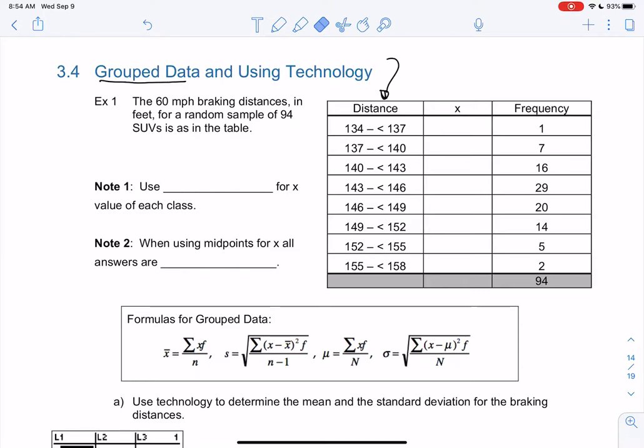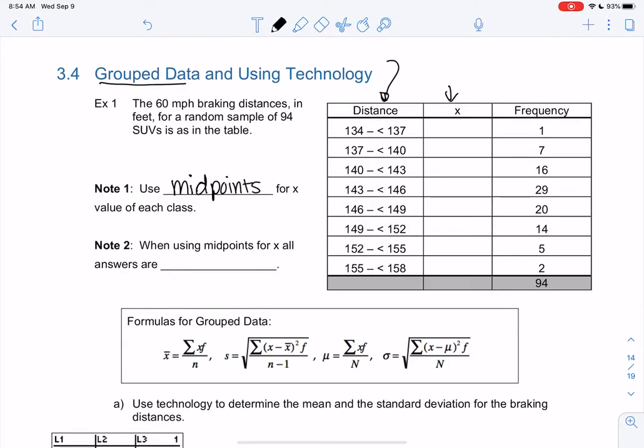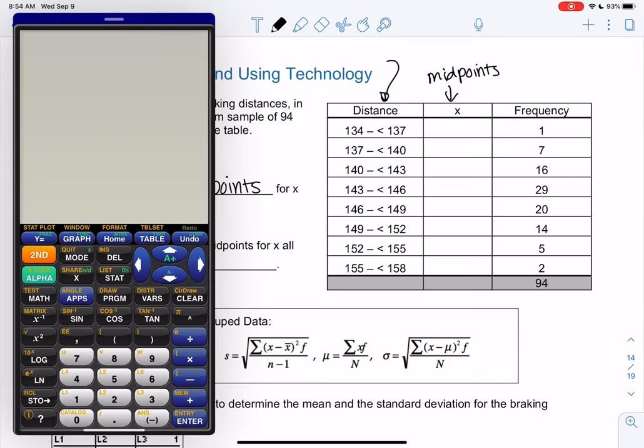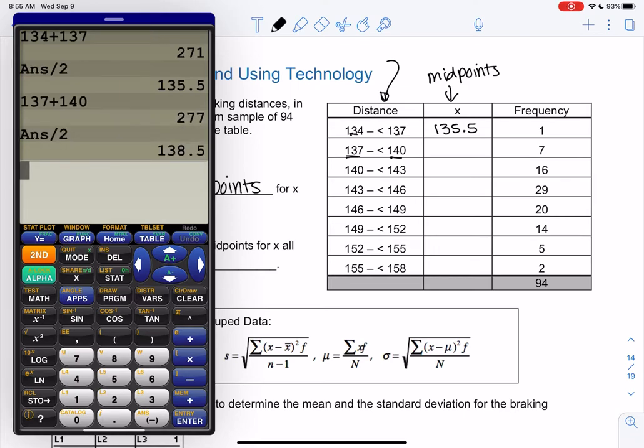So we can't really enter 134 through 137 on the calculator. The calculator would be like, which one do you want me to use? So I think what I'm going to do for the X's is use the midpoints for my X values. So what I'm going to do is I'm going to do 134 plus 137. We do the endpoints and then divide by 2. 135.5, right? Next one would be 137 plus 140, divide by 2. 138.5. We did this back in Chapter 2.